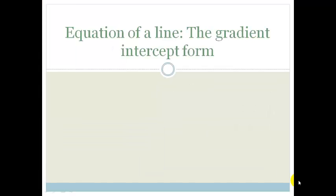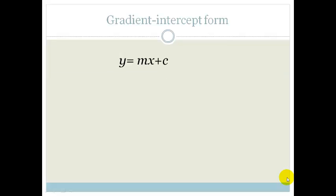In this lesson we're going to be looking at the gradient intercept form which is the one you're probably most used to seeing, which is y equals mx plus c, where the m stands for the gradient and c is your y-cut or the intercept.